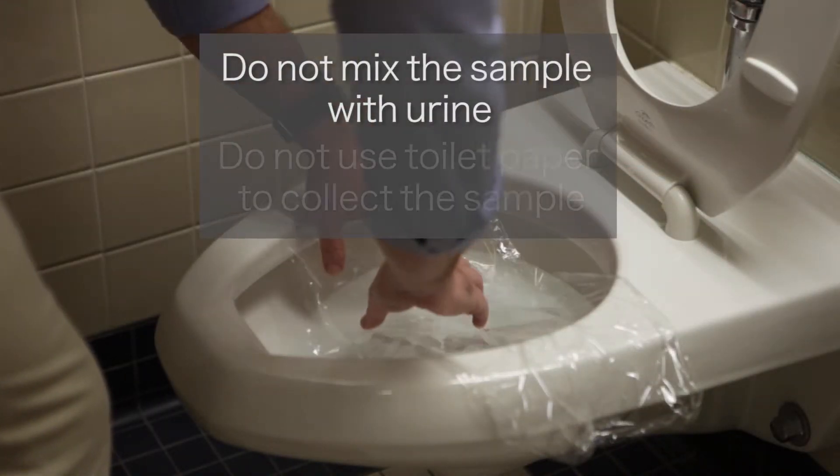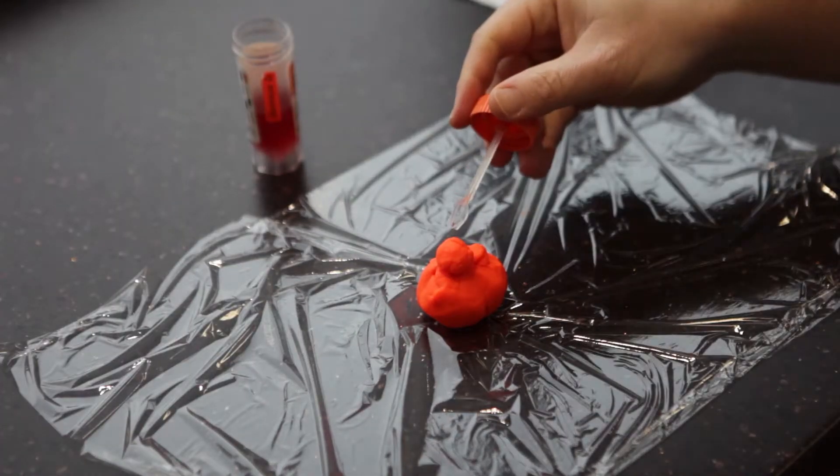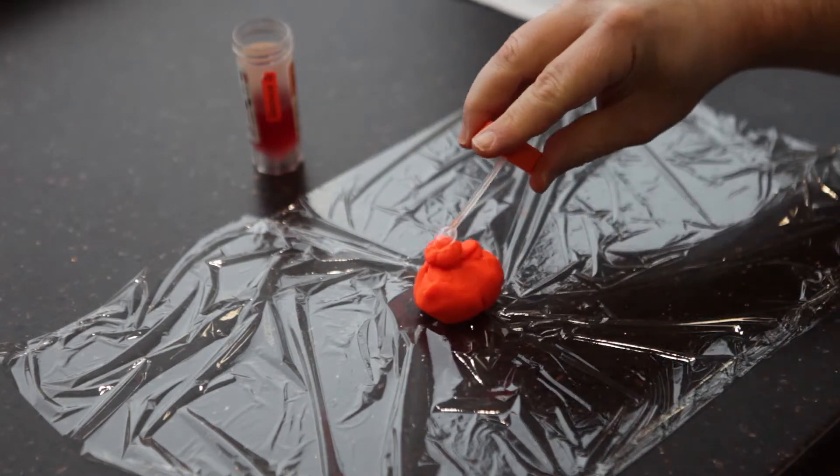Don't mix the sample with urine or use toilet paper to collect it. Use the spork attached to the vial cap to transfer about a teaspoon of stool to the vial. That's about the size of a marble.